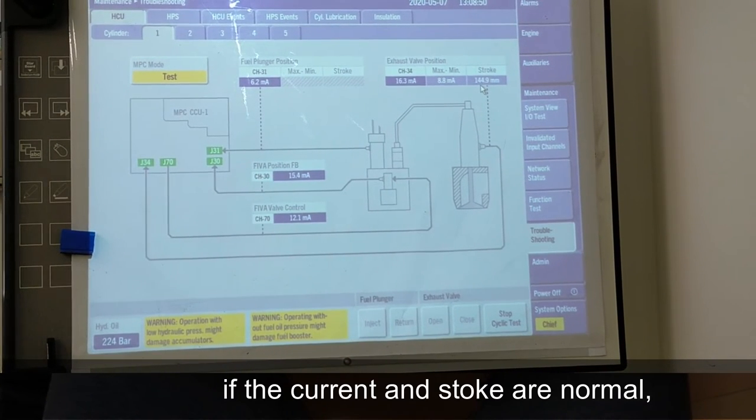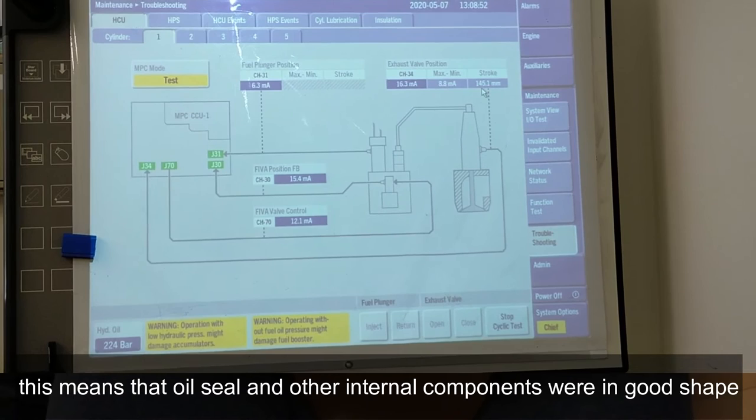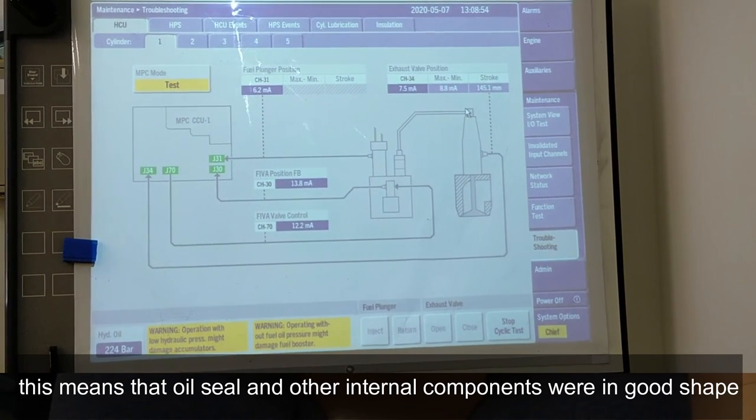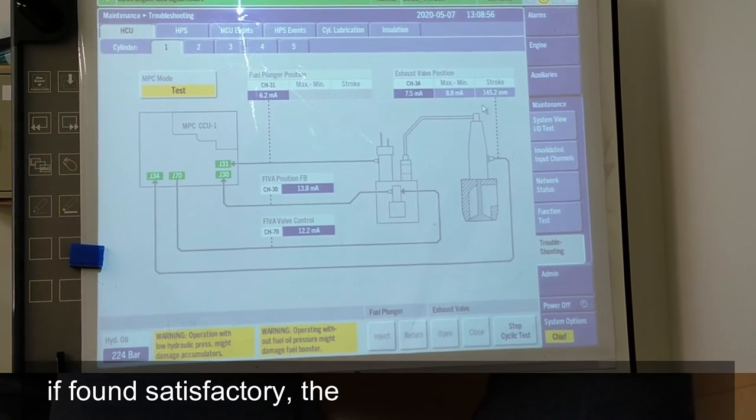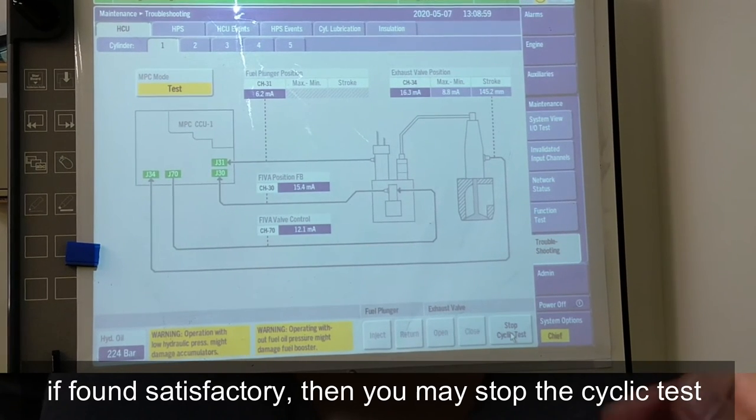If the current and stroke are normal, then this means that the oil seal and other internal components were in good shape. If you found it satisfactory, then you may stop the cyclic test.